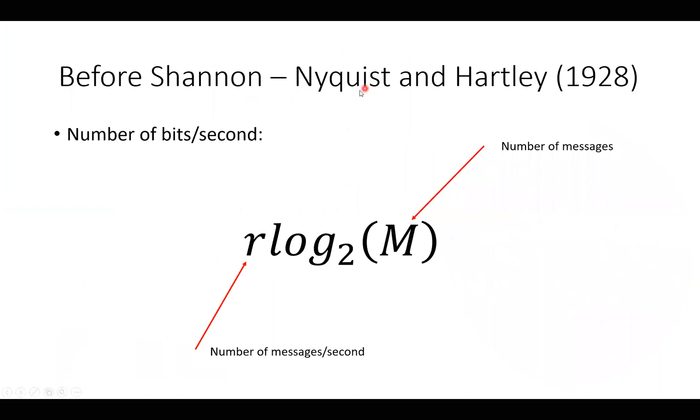Before Shannon we had the Nyquist and Hartley formula that says the number of bits per second in a channel was given by the number of messages multiplied by the number of messages per second that was sent. When we take the log 2 of the number of messages we get the number of bits in each message. If you for instance have 16 messages, the log 2 of 16 is 4, that means we have 4 bits per message.